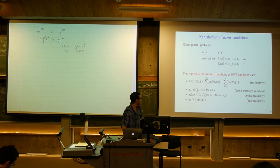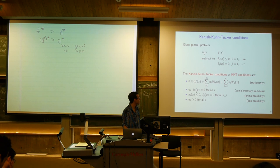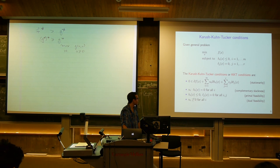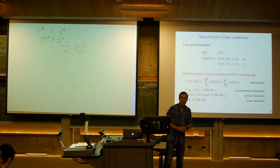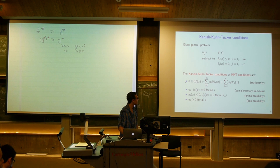The second condition is called complementary slackness, which says that either the i-th inequality constraint is tight at x (h_i(x) = 0) or the i-th dual variable u_i equals zero. Their product must be zero — if the constraint wasn't tight, the corresponding dual variable must be zero. The last two conditions are primal and dual feasibility: x must satisfy all inequality and equality constraints, and u must be non-negative in each component.